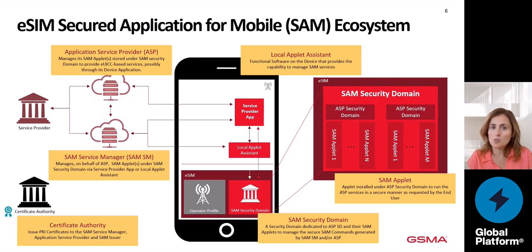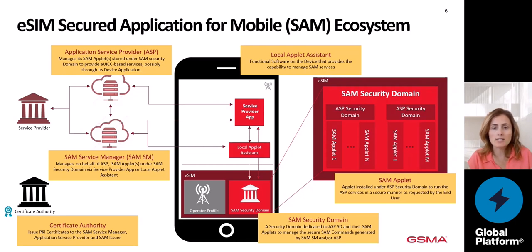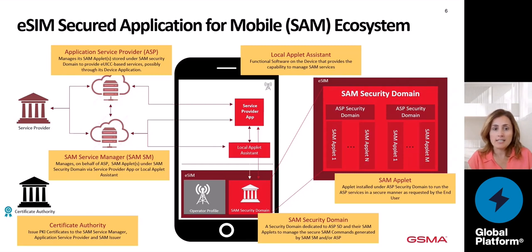The local applet assistant is a piece of software on the device that provides the capability to manage the SAM services to the SAM SM. The SAM applet is installed under a dedicated SSP security domain to run the SSP service in a secure manner as requested by the end user. The SAM security domain is a dedicated SSP SD under the SAM applet to manage the secure SAM commands generated by the SAM SM or the SSP. Inside of the SSP security domain we can have several SSP security domains. The last element is the certificate authority, which is in charge to issue PKI certificates to the different elements in the ecosystem: the SAM service manager, application service provider, and SAM issuer.